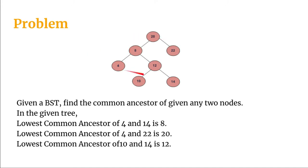Let's trace through an example with nodes 4 and 14. We start from the root, which is 20. We see that 4 is less than 20 and 14 is also less than 20, so the second condition is satisfied — both are less than 20 — and we traverse to the left child, arriving at 8. Now with root as 8, we check if both 4 and 14 are greater than 8 — no, because 4 is not greater than 8. We then check if both are less than 8 — no, because 14 is not less than 8. At that point, neither condition is satisfied, so we return node 8 as the lowest common ancestor.